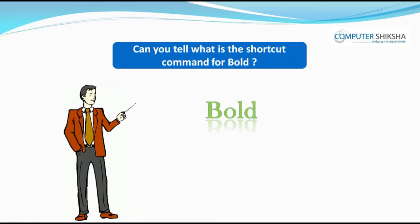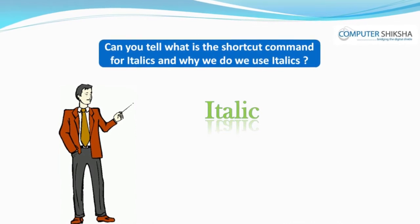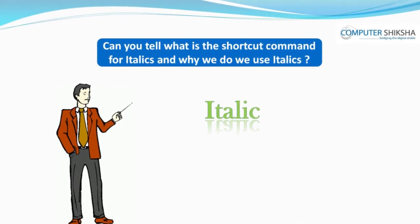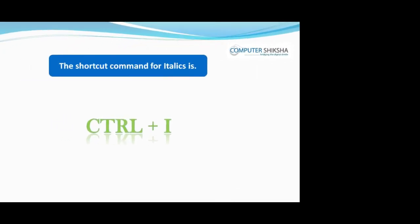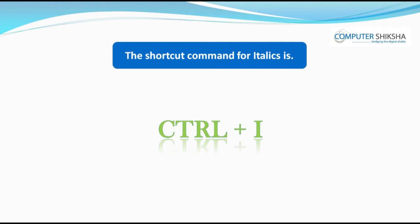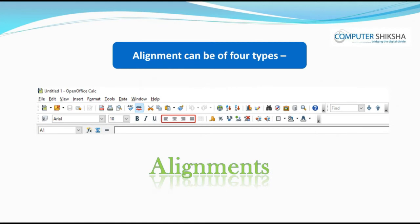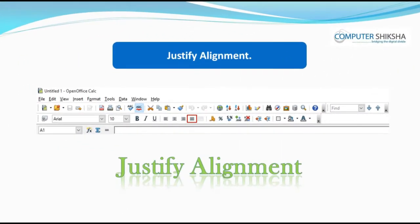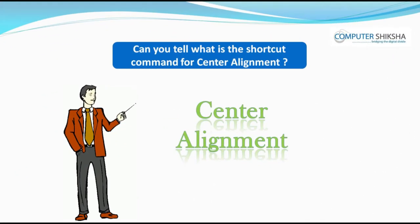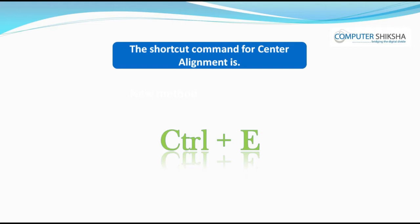Can you tell what is the shortcut command for bold? The shortcut command for bold is Ctrl+B. Can you say what is the shortcut command for italics and why do we use italics? By using italics, you can make your text and numbers appear tilted. The shortcut command for italics is Ctrl+I. Can you tell how many types of alignments are there? Alignment can be of four types: left alignment, right alignment, center alignment, and justify alignment. The shortcut command for center alignment is Ctrl+E.